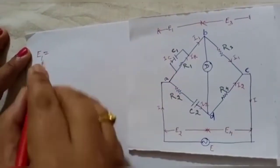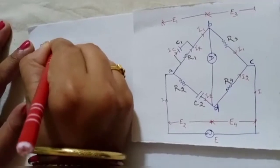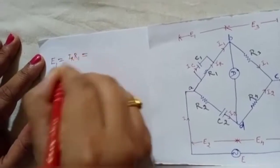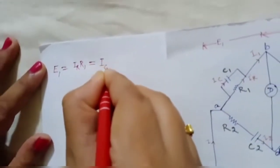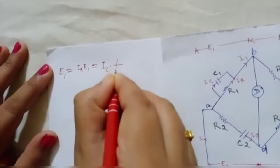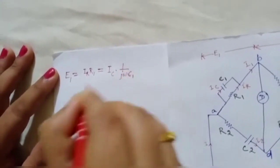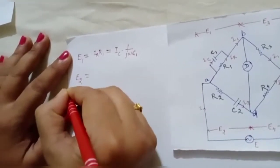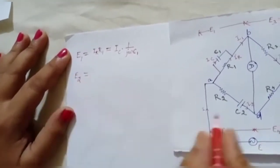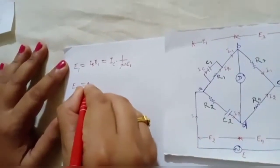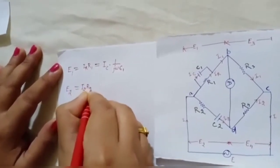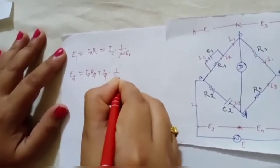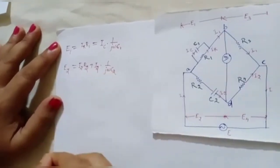The value of E1: since arm one is a parallel branch, E1 = IR·R1 (for the resistive branch), and also E1 = IC·(1/jωC1) (for the capacitive branch). For E2, since it is a series combination: E2 = I2·R2 + I2·(1/jωC2).